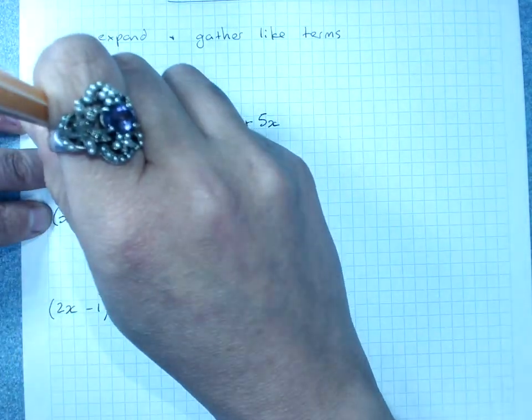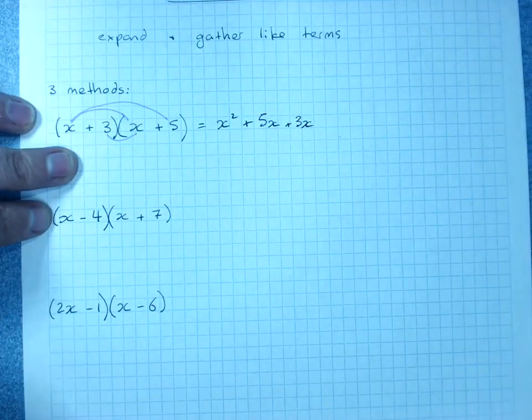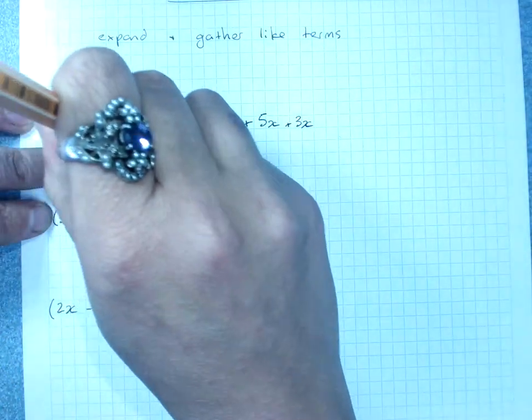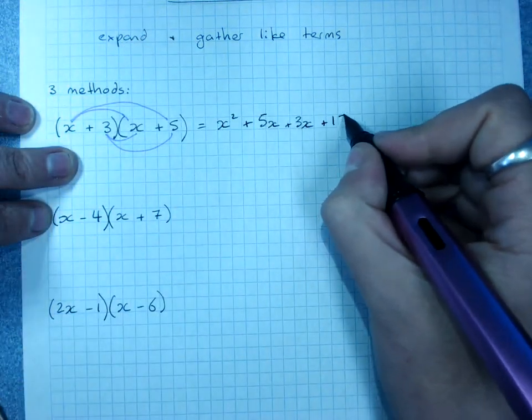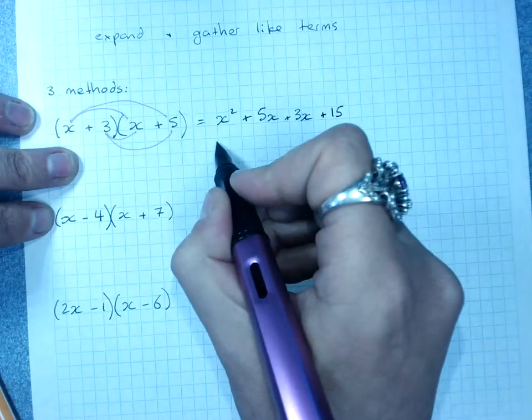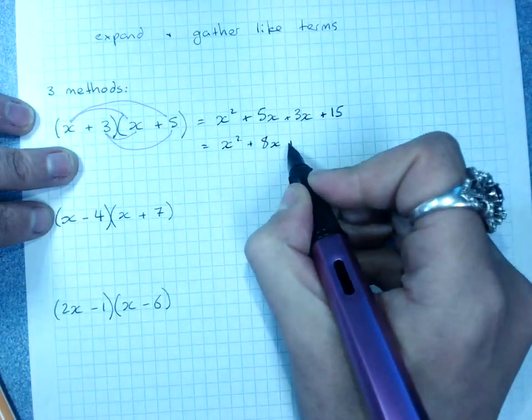Everything's positive, so that's plus 5x. 3 times x, plus 3x. And 3 times 5, plus 15. And gather your like terms. That's x squared, plus 8x, plus 15.